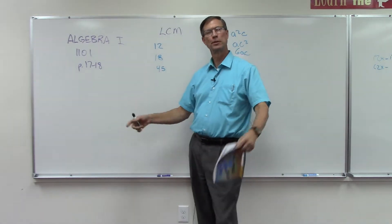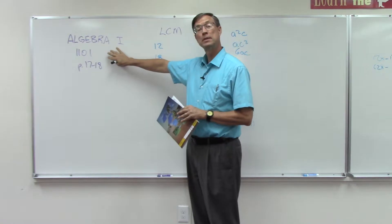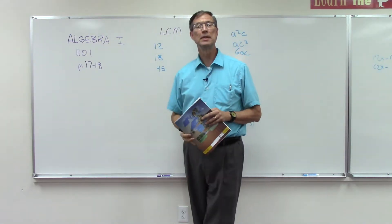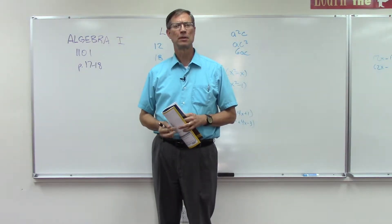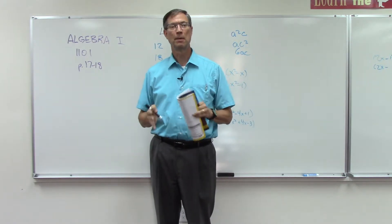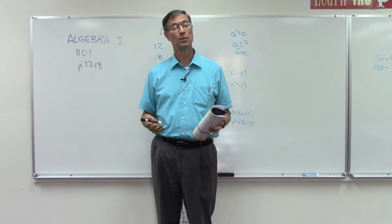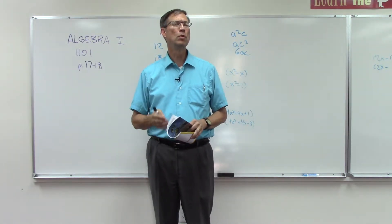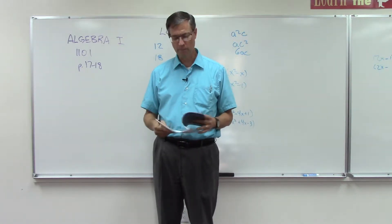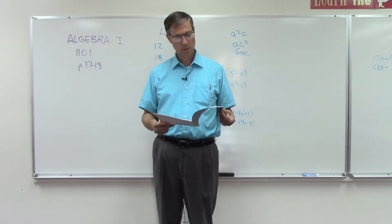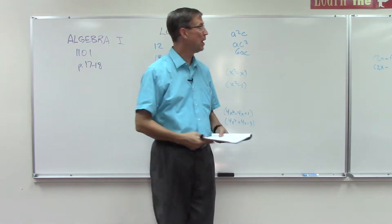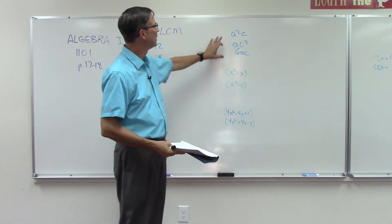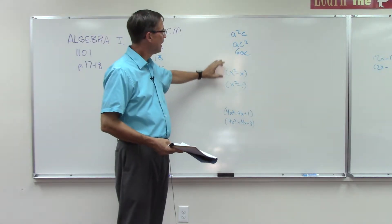I was requested to make a video for Algebra 1 pace 1101, looking particularly at pages 17 and 18. This is about finding the LCM, which stands for least common multiple. A lot of students get that confused with the greatest common factor. The LCM also becomes the common denominator we're looking for, and it's one thing to do it with fractions but a whole other thing in algebra. I'm going to use different numbers than what's in the pace — 12, 18, and 45 — and walk through the steps.